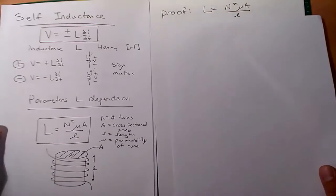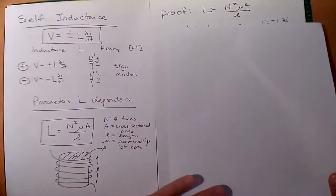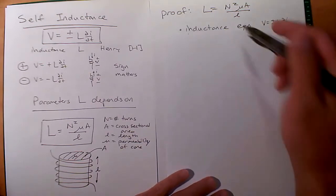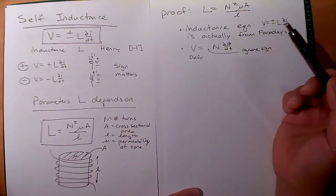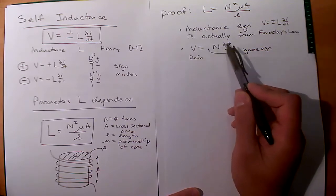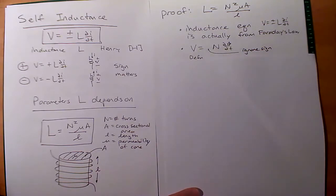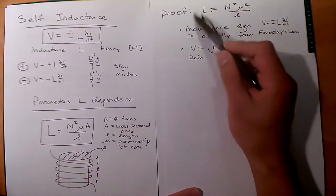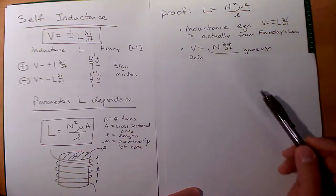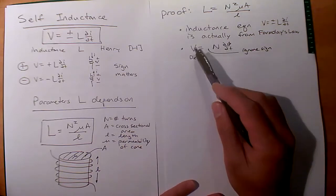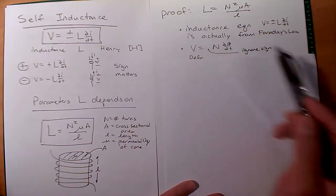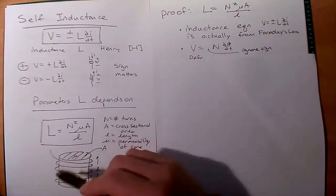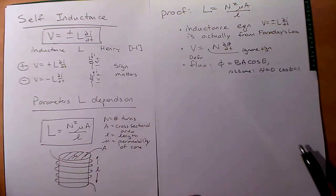Let's look at where L equals N²μA/l comes from — it actually comes from Faraday's law. Let's review: V equals N·dΦ/dt. Let's ignore the sign for now because we just want to see where the inductance comes from. So you have a voltage induced in a conductor, and then N·dΦ/dt. We have a similar situation going on here.